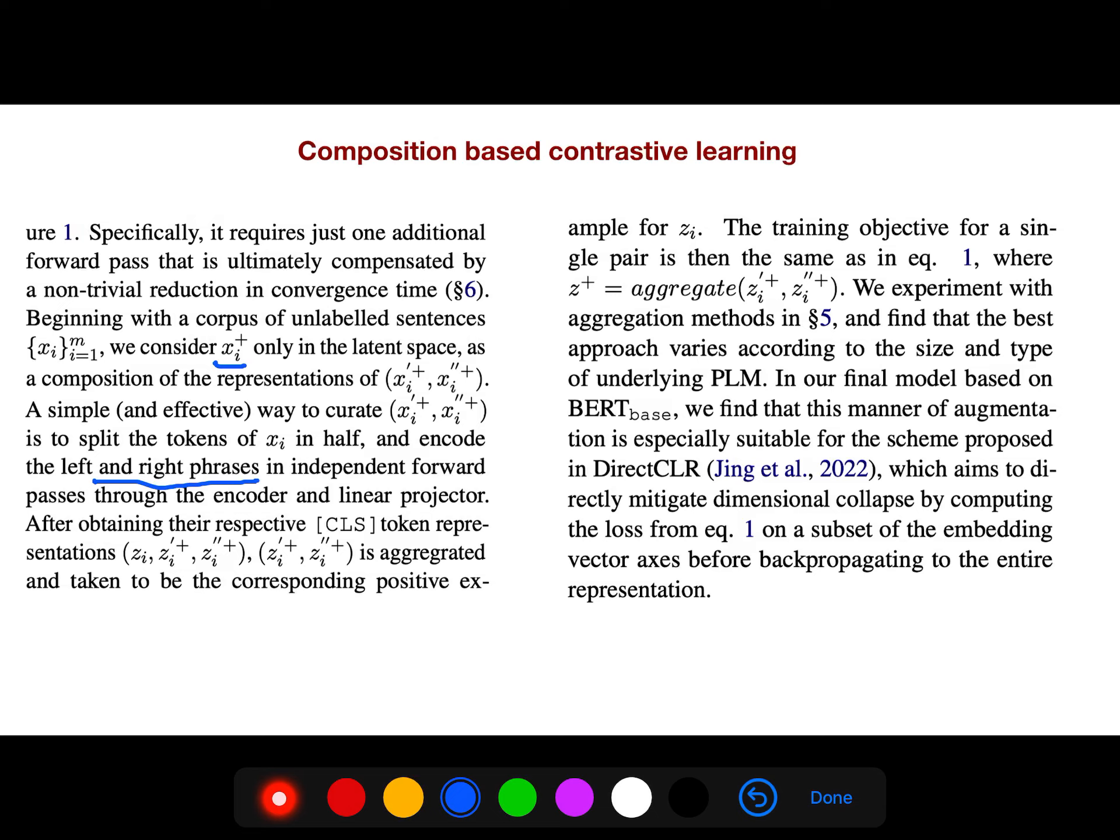As I said, after obtaining the respective CLS token representations, we aggregate them to get the corresponding positive examples. The training objective for a single pair is then the same, and this is just the aggregate of them.